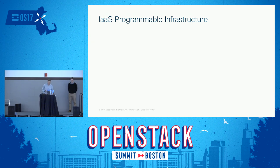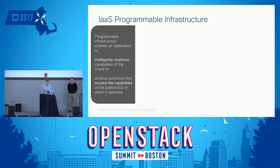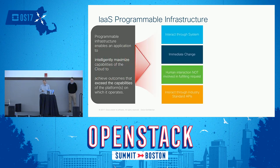What does that mean for infrastructure as a service? We have OpenStack clouds deployed, and we want to offer them as infrastructure as a service. There's a quote here on the slide from one of our chief IT architects defining what programmable infrastructure is. What we're trying to do is interact through the system — removing humans from being involved. We can know about it, but we shouldn't be involved in delivering it.